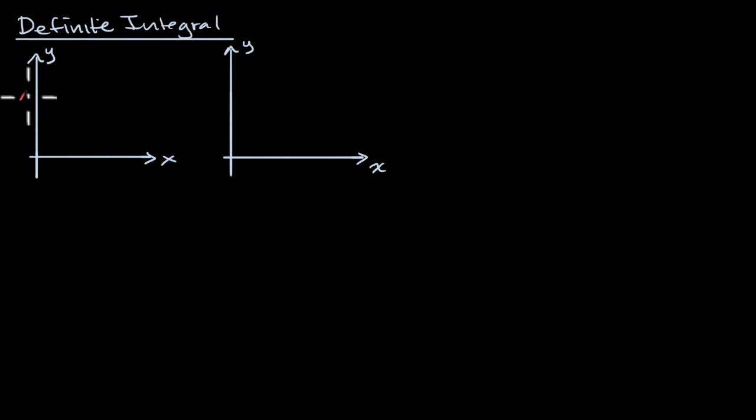And let's say I have some function here. So this is f of x, right over there. And let's say that this is x equals a. And let me draw a line going straight up like that. And let's say that this is x equals b. And just like that.